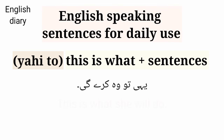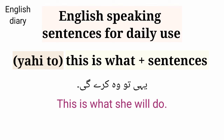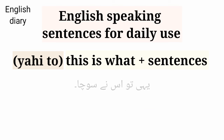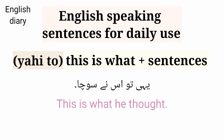For the future tense: 'This is what she will do.' If you are talking about the future, you use the future form. For past: 'This is what he thought.' This is what I am saying — the tense simply changes after 'this is what.'